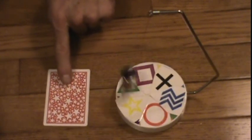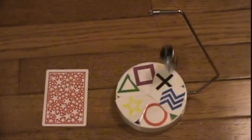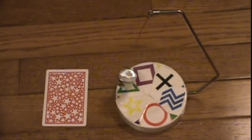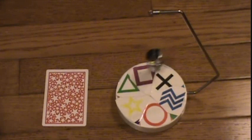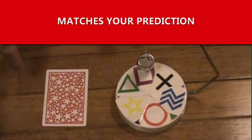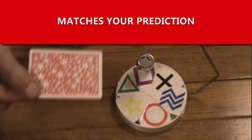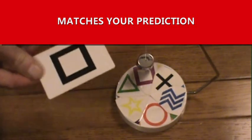Another member from the audience holds on to the prediction. The pendulum goes around, eventually slows down, and settles on one symbol. This time, lands on the square, and of course, you predicted it.